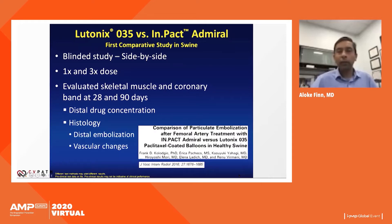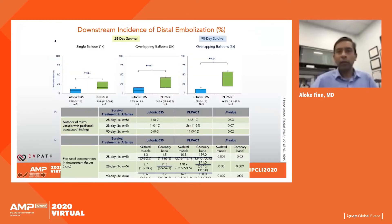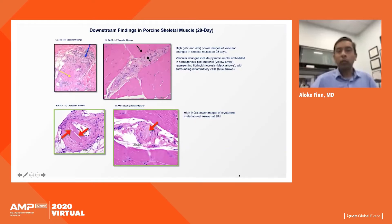In a preclinical study, when drug-coated balloons were used in the iliofemoral region and downstream drug concentrations were examined histologically, paclitaxel emboli were found downstream. For both the Lutonix and IN.PACT paclitaxel-eluting balloons, significant downstream emboli were found with both single and overlapping balloons at 28 and 90 days. Skeletal muscle and coronary band areas had detectable paclitaxel concentrations. Fibrinoid necrosis in downstream arterioles and solid-phase crystalline paclitaxel were found in skeletal muscle arterioles.